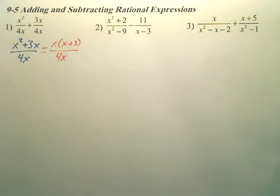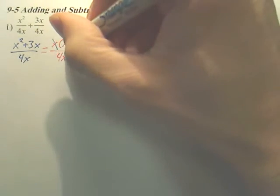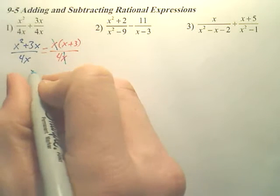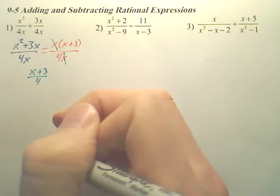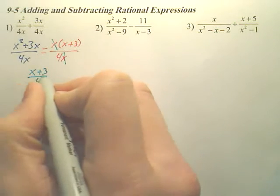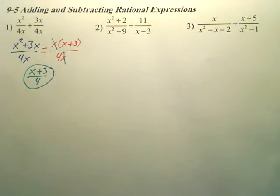Does anything cancel or are we done? The X's cancel, so I could cancel that with that, leaving myself with X plus 3 over 4. Nothing else cancels because you can't cancel a piece off because the plus is there. We are done. Always be happy when you have a common denominator to begin with.